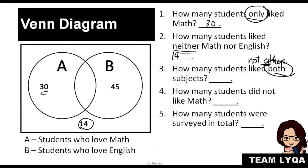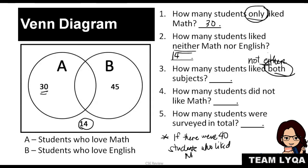For example, if there were 40 students who liked math, how many liked both subjects? Notice there's no word 'only' here — so 40 students liked math, not only math. If you have 30 who like only math, and the total who liked math is 40, then the intersection — the part we didn't count yet — would be 10. So the answer to how many students liked both subjects is 10.